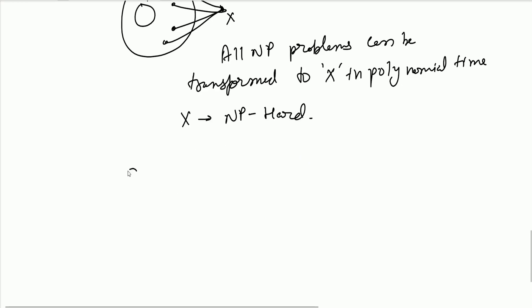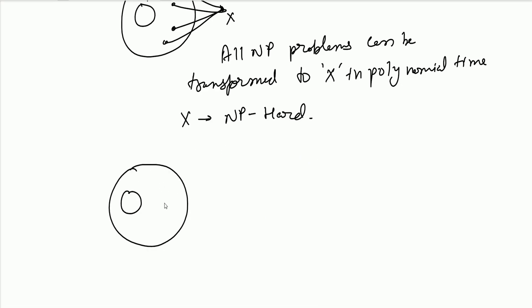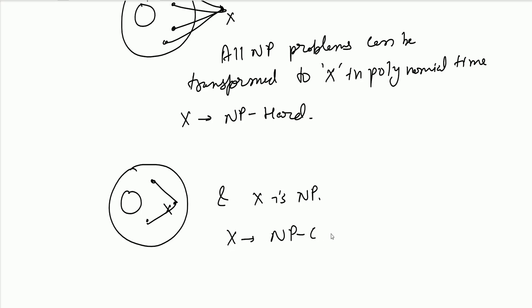And if we see that this X does not belong outside NP but belongs to NP itself — meaning all NP problems can be transformed to X in polynomial time and X is itself in NP — then X is an NP-Complete problem.